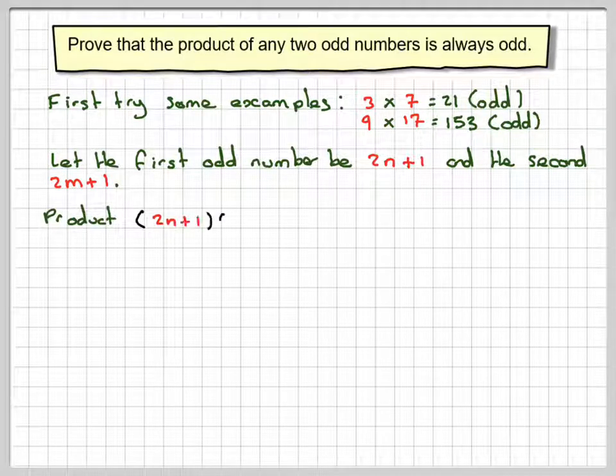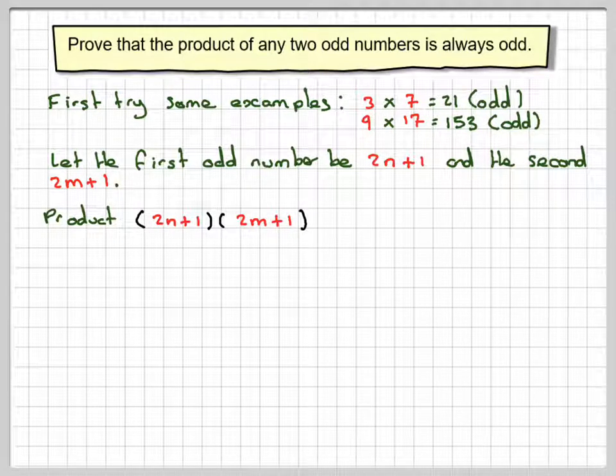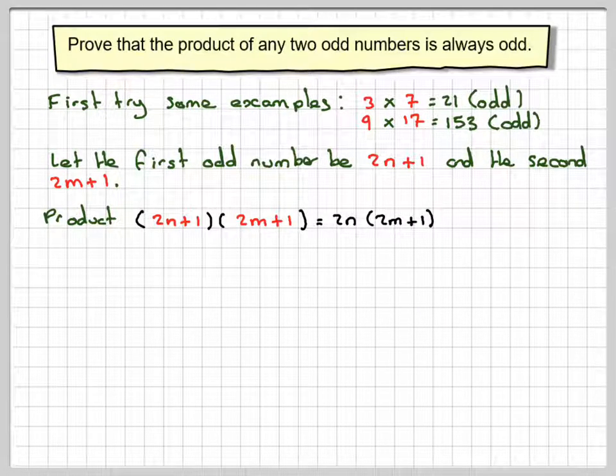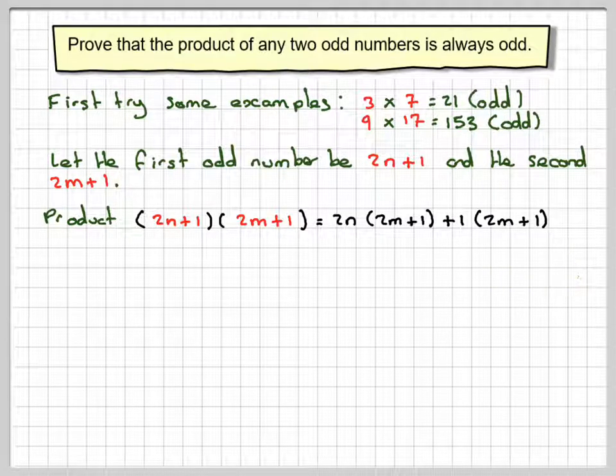So the product, because it says the product of any two odd numbers, will be 2n plus 1 times 2m plus 1. So we can use a little bit of algebra to expand that. So it's 2n times 2m plus 1 plus 1 times 2m plus 1.